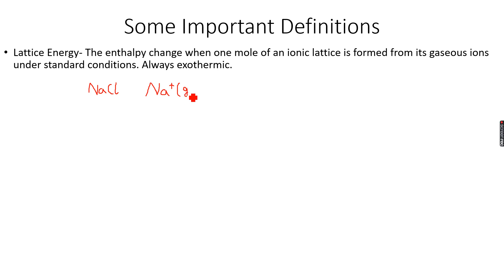When one mole of NaCl is formed from its gaseous ions, which are Na+ and Cl- in gaseous state. The state symbols are very important because they are the defining factors of lattice energy to give me solid NaCl. This is the equation that represents the lattice energy of sodium chloride: one mole of sodium chloride is being formed from its gaseous ions under standard conditions.